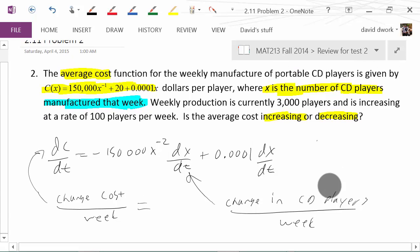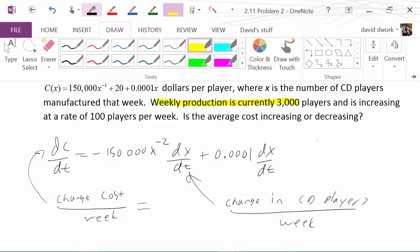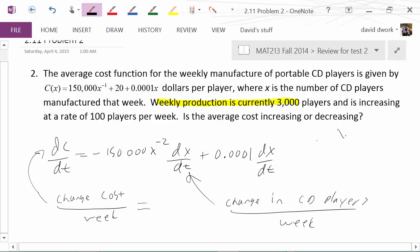Change in cost per week is what the problem is asking us for, so we're going to leave that one alone. That's our answer. So then, x is the number of CD players. Do we know the number of CD players being produced? The weekly production is currently 3,000 CD players, so therefore we've got x equals 3,000.